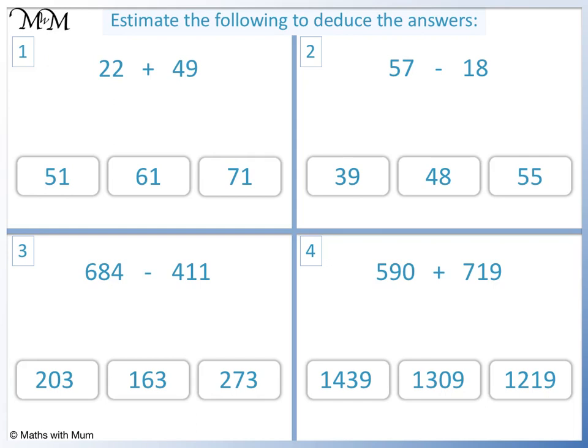Question 1. 22 rounds to 20 and 49 rounds to 50. 20 plus 50 equals 70. The closest answer to 70 is 71.